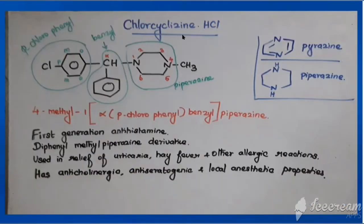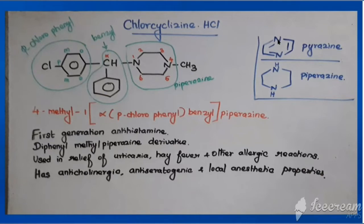The next drug is chlorcyclizine, available as a hydrochloride salt — chlorcyclizine hydrochloride. In its structure, the central benzyl group has its alpha carbon attached on one end to parachlorophenyl and on the other end to 4-methylpiperazine. Piperazine is a six-membered heterocyclic ring with two nitrogens at positions 1 and 4. If the nitrogens were at 1,3 it would be pyrimidine; at 1,4 it is pyrazine (unsaturated) or piperazine (saturated).